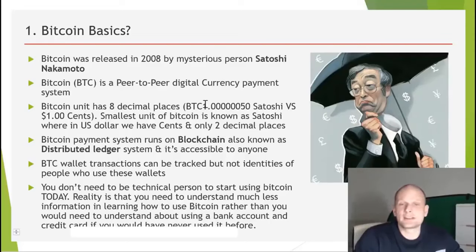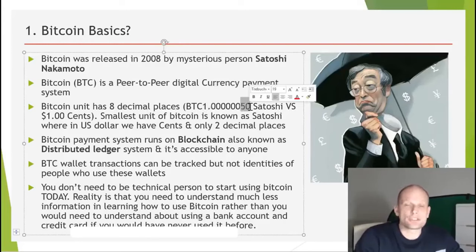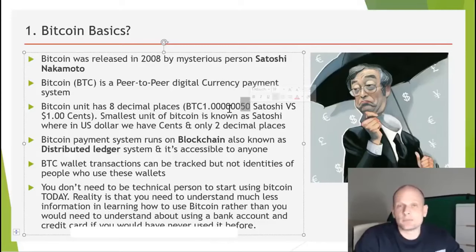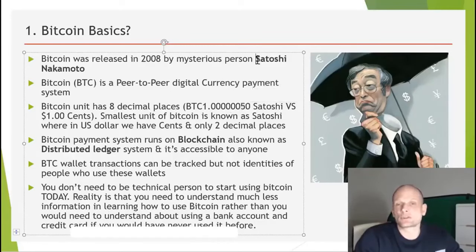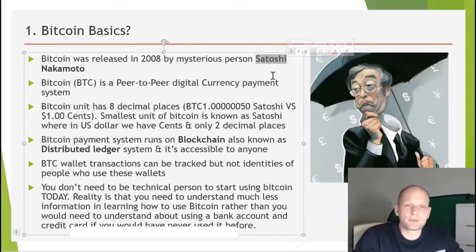Bitcoin has eight decimal places. We have one Bitcoin and 50 Satoshis. Satoshi is the name for the smallest unit of Bitcoin — just like in dollars we have cents, in Bitcoin we have Satoshis.